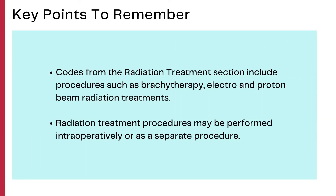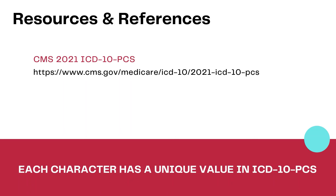Key points to remember: the radiation treatment section includes procedures such as brachytherapy, electron beam, and proton beam radiation treatments. The most common types of radiation are coded to this section. Radiation treatment procedures may be performed intraoperatively or as a separate procedure. If you do not have a copy of the ICD-10 PCS, you can download the online version provided by CMS from the link in the video description.